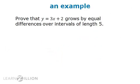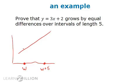Here's an example involving a particular line. Imagine the x-axis. Imagine w and w plus 5. If we go up to the line, this is going to be 3w plus 2, and this is going to be 3 times w plus 5 plus 2.